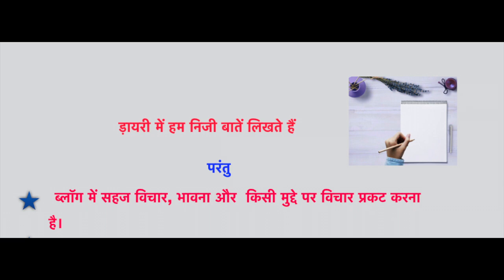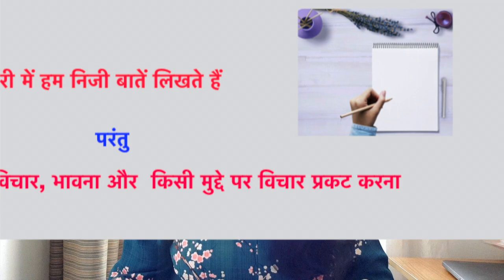In a diary, we write personal things, but in a blog, we present personal feelings or issues (mudde). You don't bring in purely personal things — personal things you keep for diary writing. In a blog, you present general thoughts, feelings, social issues (samajik mudde), or political issues (rajnitik mudde).